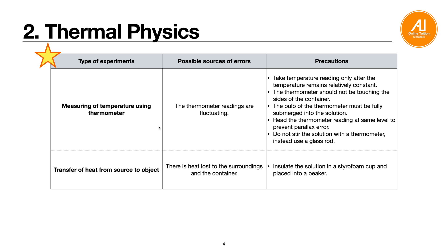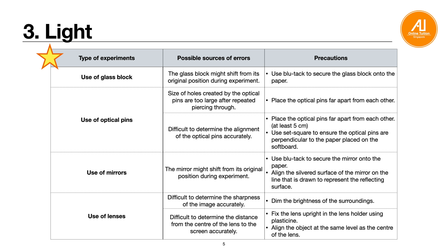Next: light, which is quite common. Whenever you use a glass block, it might shift from its original position during the experiment. Usually the experiment asks you to trace the position of the glass block on paper, so use blu-tack to secure the glass block onto the paper to prevent it from shifting, as it can be hard to return it to the exact location. Next, when using optical pins to align them, the error is that the holes created by the pins become too large after repeated piercing.